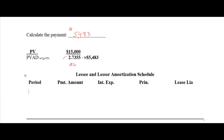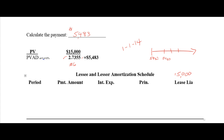Now let's make an amortization schedule. Assume you start on January 1, 2014. What would your amortization schedule look like for an annuity due where the present value starts at $15,000 with $5,483 payments? There are three payments: the first due on the day of signing, the second due a year later, and the third due at the beginning of the third year. Go ahead and calculate that amortization schedule.